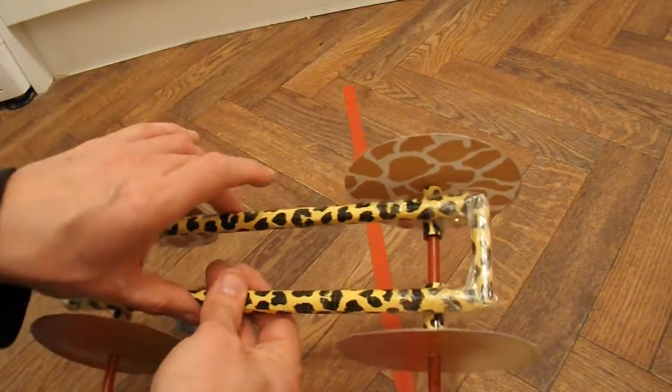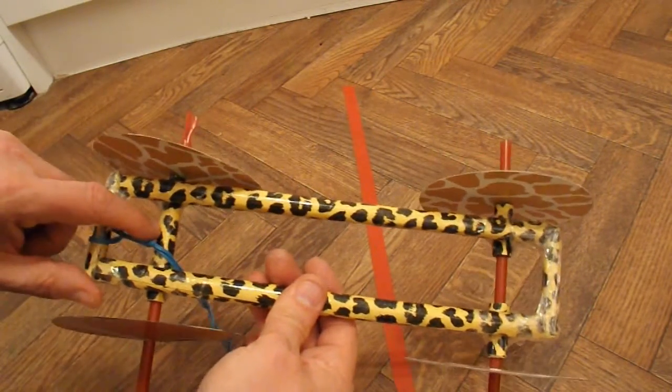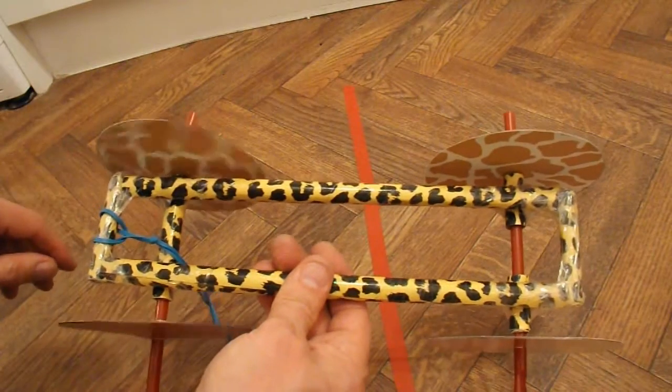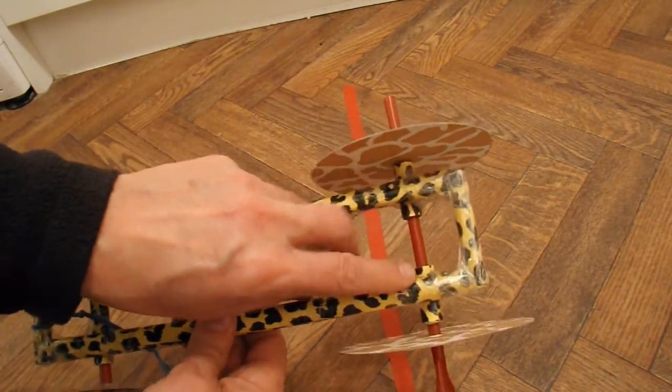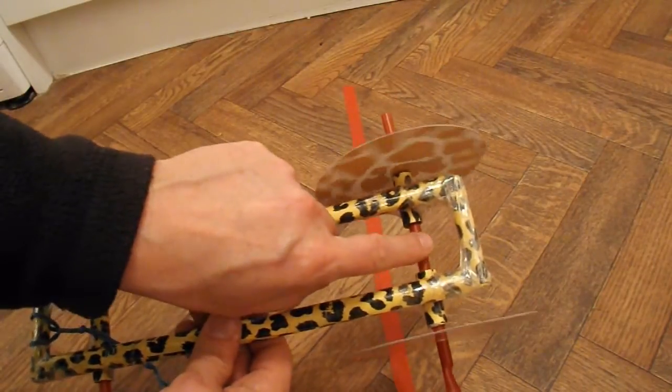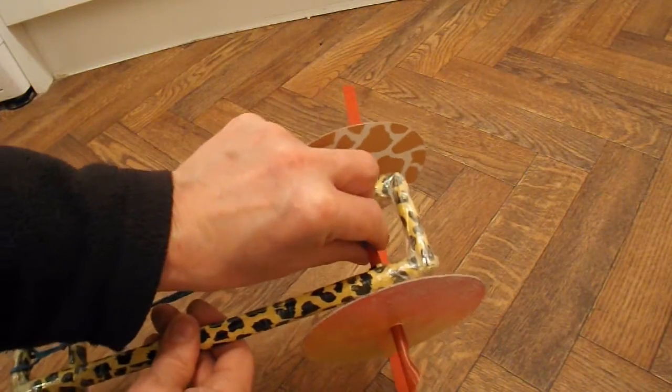So we've got two long tubes. Two short tubes as cross members. Another tube there for the axle tube. And two short tubes at the back. So we've got a gap in the middle. So we can wrap the rubber band round the back axle.